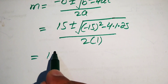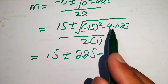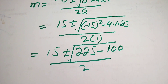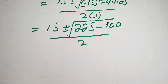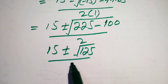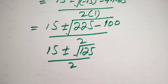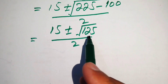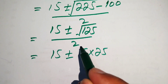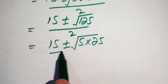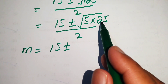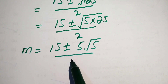We compute: (−15)² = 225, and 4·25 = 100. So the discriminant is 225 − 100 = 125. We simplify √125 = √(25·5) = 5√5. Therefore m = (15 ± 5√5) / 2.